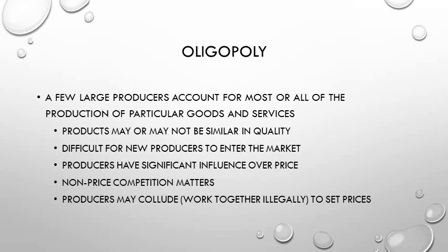Producers in an oligopoly may even collude — work together illegally — to set prices for their benefit. You don't have many producers supplying a particular product when oligopoly exists; just a few very large producers.